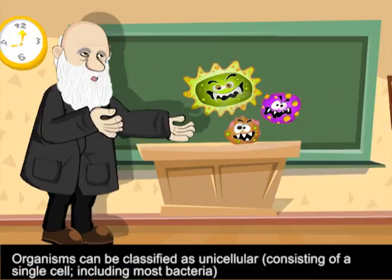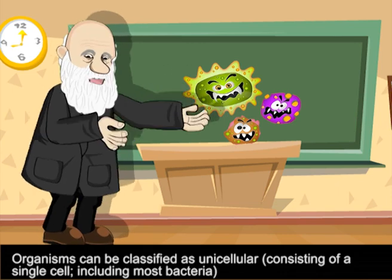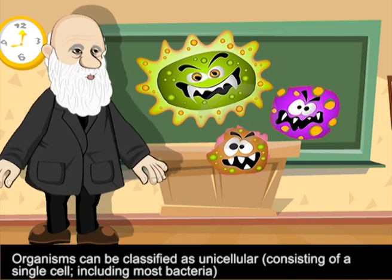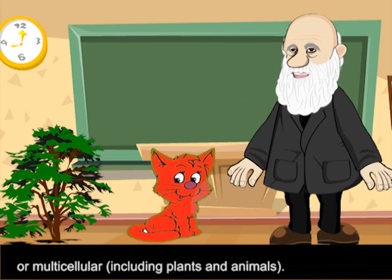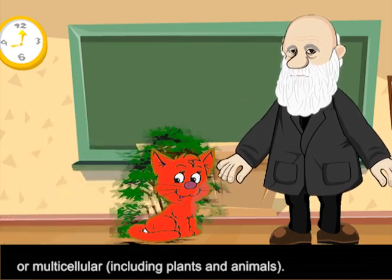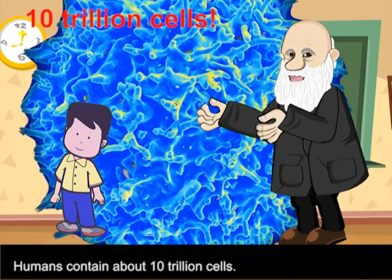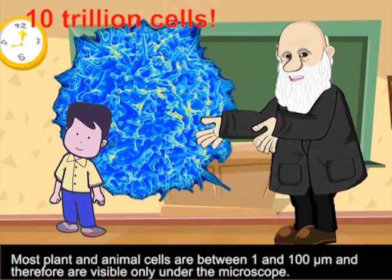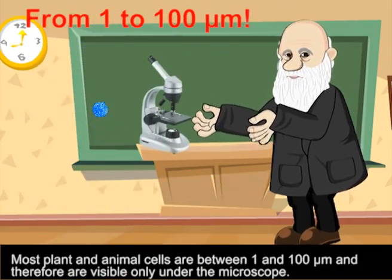Organisms can be classified as unicellular, consisting of a single cell, including most bacteria, or multicellular, including plants and animals. Humans contain about 10 trillion cells. Most plant and animal cells are between 1 and 100 micrometers, and therefore are visible only under the microscope.